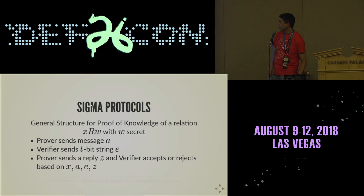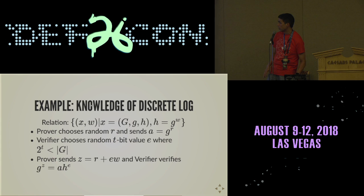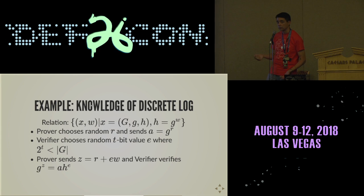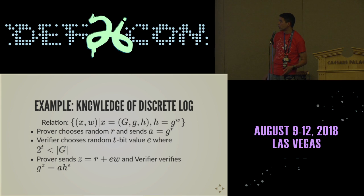The first example is a discrete log-based sigma protocol: how can I prove to you that I know the discrete log of a given group element in a given base, without revealing that discrete log? What we do is start with a random exponentiation of our generator G — that's our A value, which we send back. The verifier sends back an E value that's just some random value within the size of the group.